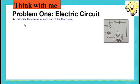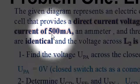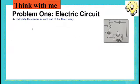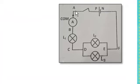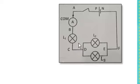Now it's time to talk about the current. Calculate the current in each one of the three lamps. The main current is equal to 500 milliampere. This current flows through the ammeter and then through lamp L1 along the same path — still 500 mA — because of series connection and the law of uniqueness of current, until we reach point D where branching occurs and we have parallel connection.